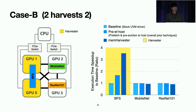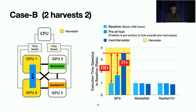For case B, BFS runs on GPU 0 and GPU 1, over-subscribing memory, while GPU 2 and 3 leave spare memory. BFS harvests two neighbor GPUs' spare memory and shows significant performance improvement in MemHarvester compared to both baseline and the prior technique. There is some performance interference in neighbor GPUs: MobileNet on GPU 2 shows 7% interference and ResNet shows 9% interference compared to baseline.